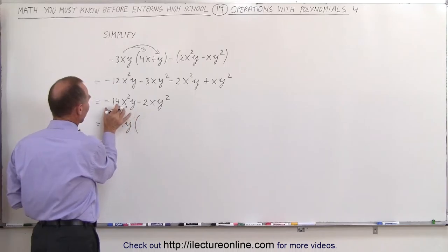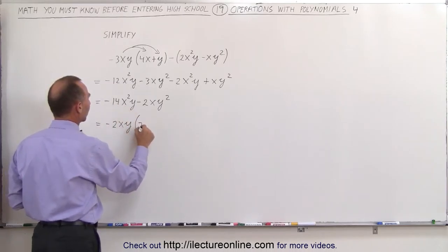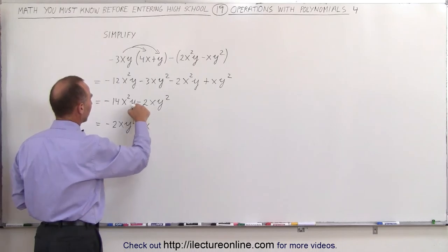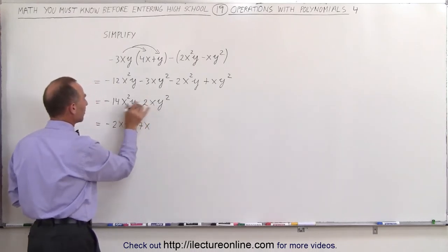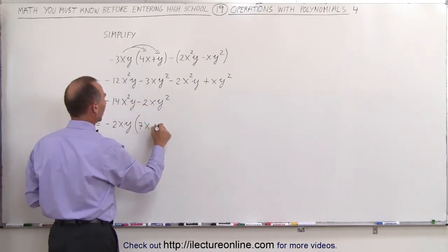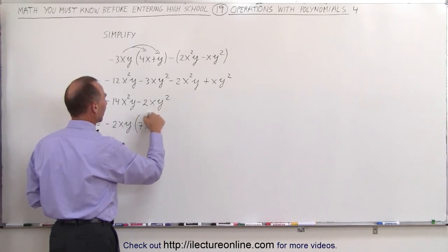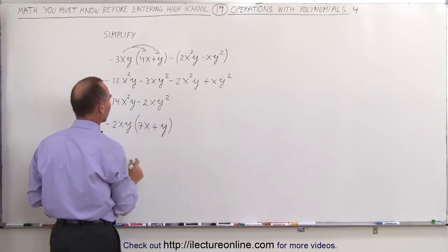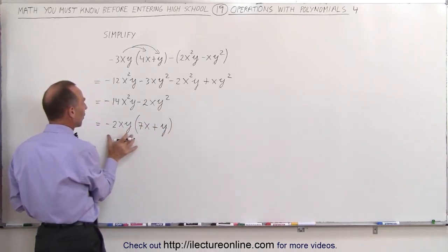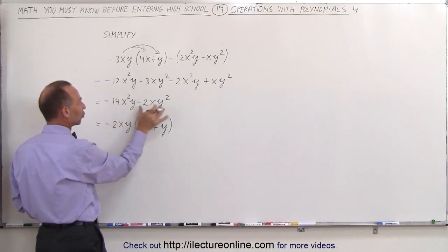Now we have to combine like terms together, which means the letter portion of each term must be identical before we can add them. So the first term here has an x squared y. Is there any other term that has an x squared y? And the answer is yes. There's another term with the exact same letter portion, x squared y,